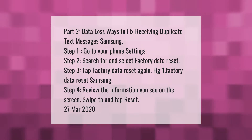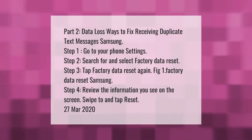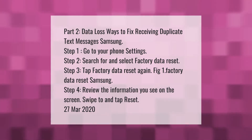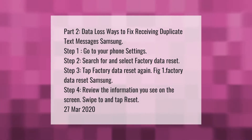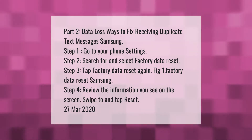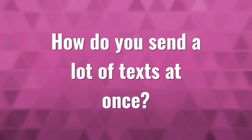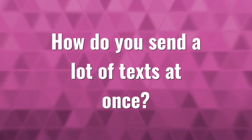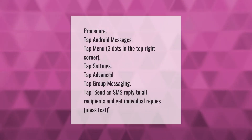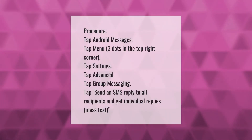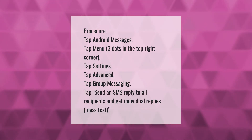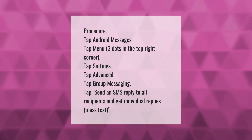Step 4: Review the information you see on the screen, swipe, and tap reset. Then tap Android Messages and tap the menu — the three dots in the top right corner.